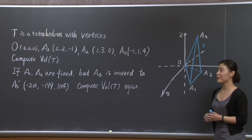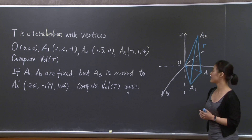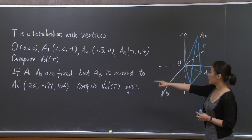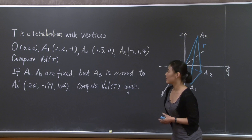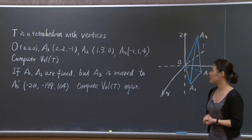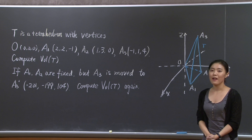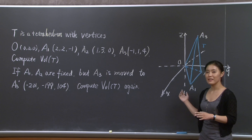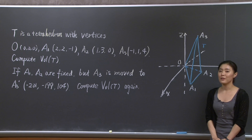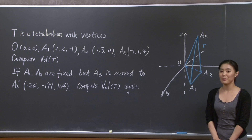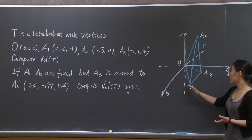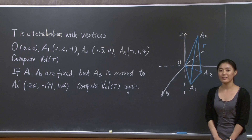Our first goal is to compute the volume of T using the determinant. The second part is: if I fix A1 and A2 but move A3 to another point A3', given by this coordinate, I ask you to compute the volume again. Since we want to use the determinant-volume relationship, we have to figure out which parallelepiped we should be looking at. Why don't you hit pause, try to work it out yourself, sketch the parallelepiped on this picture, and I will return in a while.